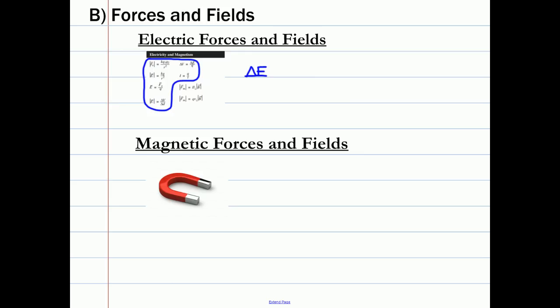Please note the difference between delta E, which is the electric potential energy, and that E, which is the electric field vector.